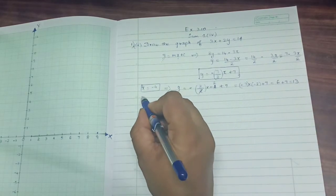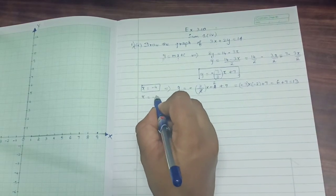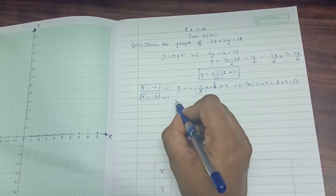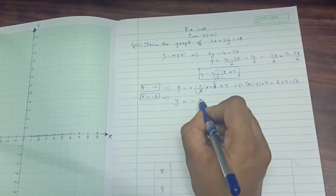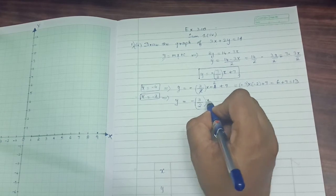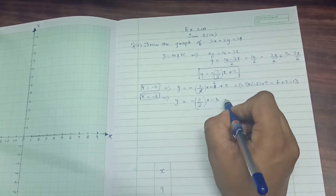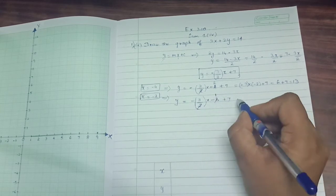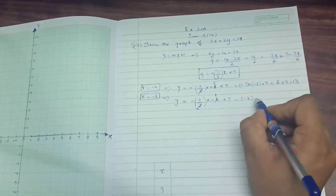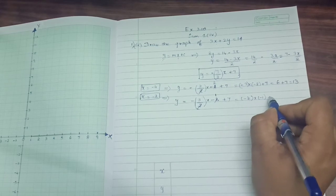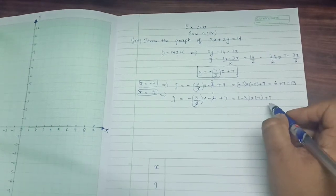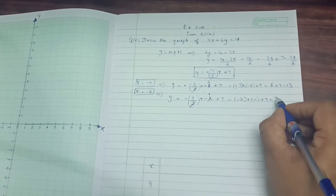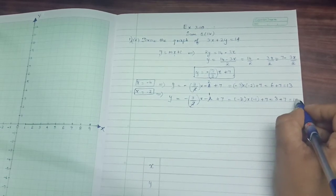Next, I am going to select x equals minus 2. y equals minus 3 by 2 into minus 2 plus 7. This 2 will get cancelled. So minus 3 into minus 1 plus 7. Calculation part, you have to be very careful. Minus 3 into minus 1 is plus 3 plus 7. That is equal to 10.